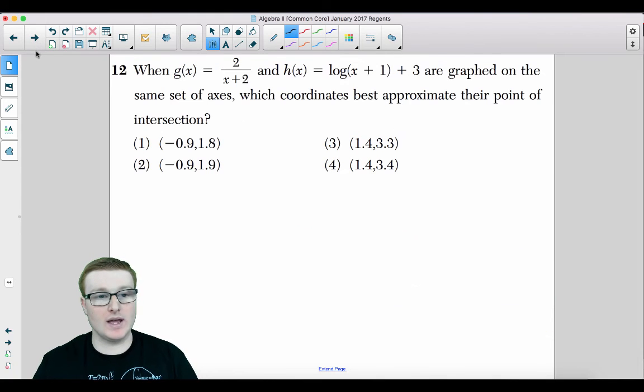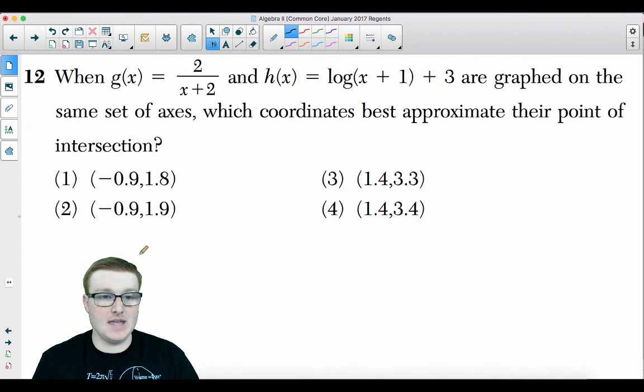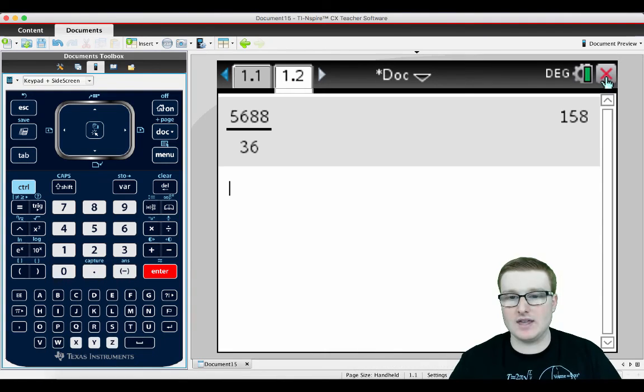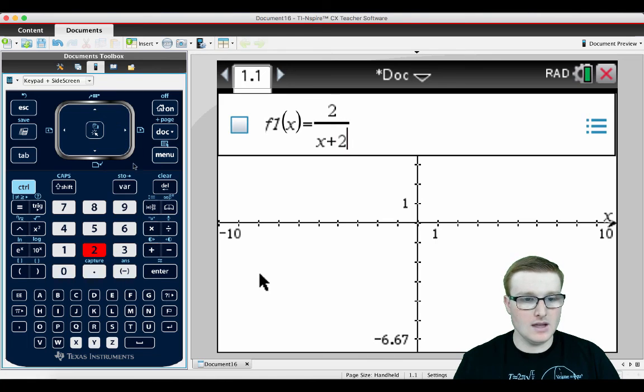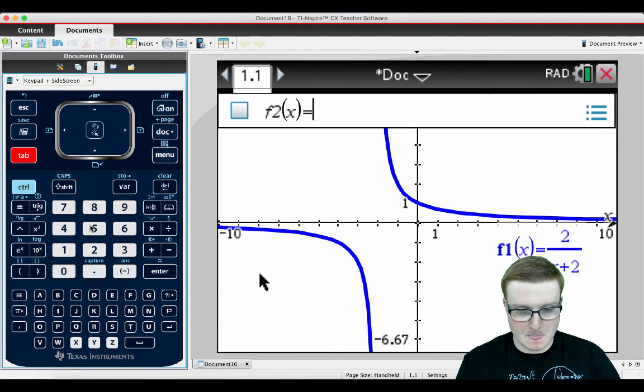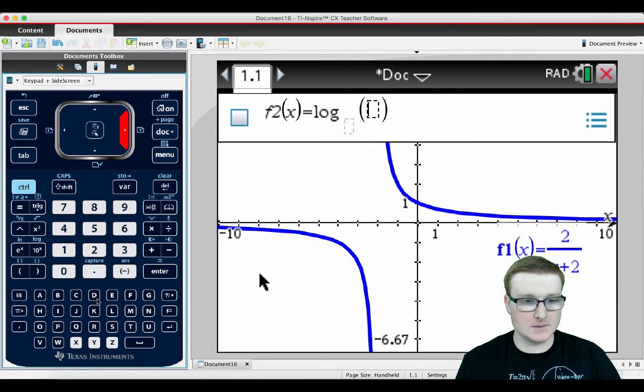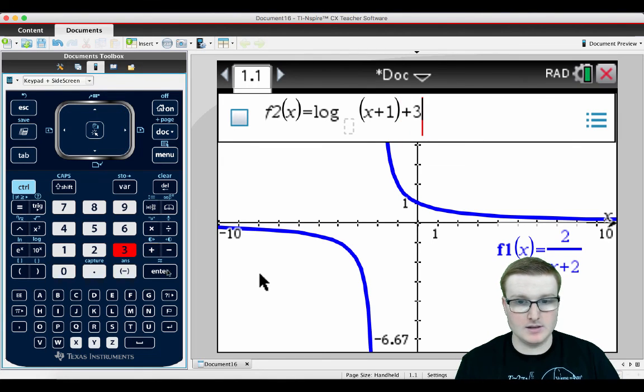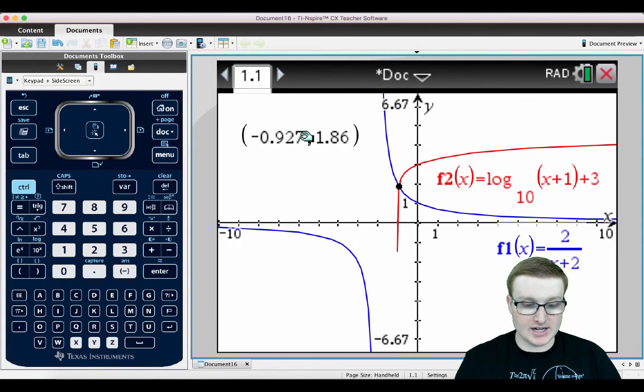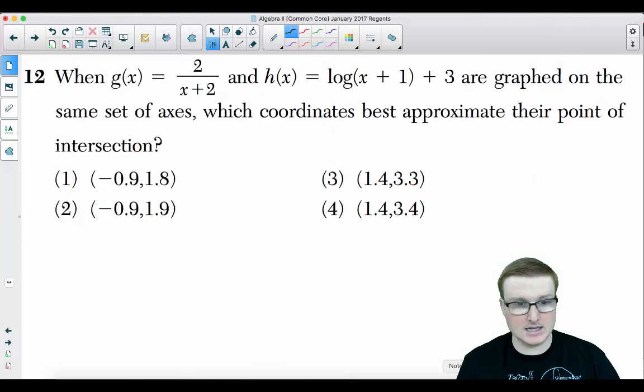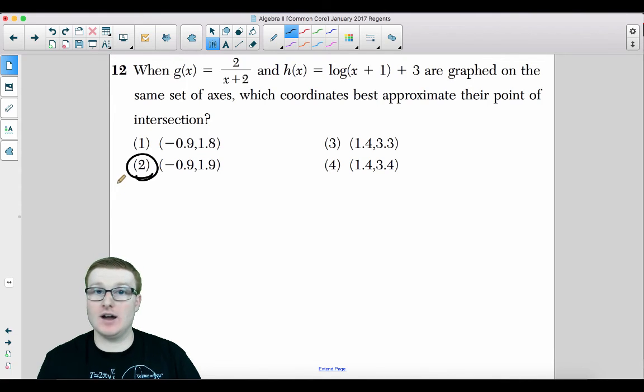Moving on to the last question, number 12. When g(x) equals 2 divided by x plus 2 and h(x) equals log of x plus 1 plus 3 are graphed on the same set of axes, which coordinates best approximate their point of intersection? Honestly, graph this. You shouldn't even be thinking about doing it algebraically. You should be going right to your graphing calculator and graphing these puppies. So we got 2 over x plus 2, enter. And we got log of x plus 1 plus 3. There's your intersection point right there. We can clearly see it. Menu, analyze graph, intersection. Click, click. Your intersection point is negative 0.9 comma 1.9. And that is going to be choice 2 for that question just by graphing it on your calculator.